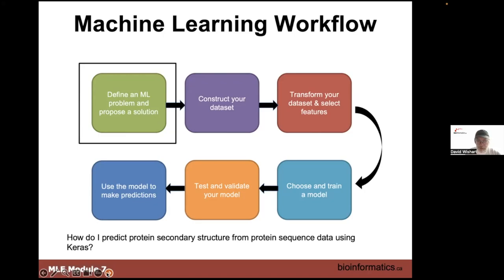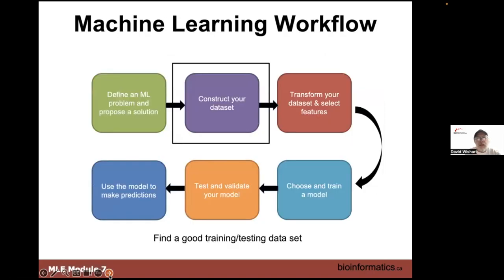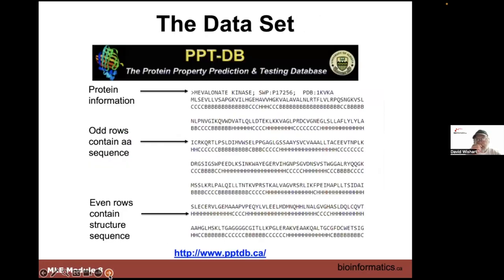That's a bit of a backgrounder. We've seen these flow charts before — hopefully everyone has that memorized and remembers the process, particularly the whole point about testing and validating and thinking about how best to define the problem and propose a solution. Everyone should remember a little about secondary structure: we take a sequence and try to predict helices, beta strands, and coils. Beta strands are shown in blue, helices in yellow, and black is the coil or unstructured regions.